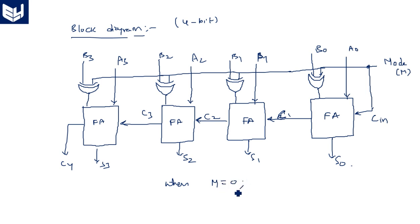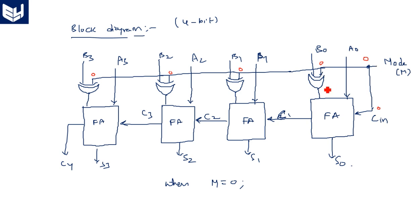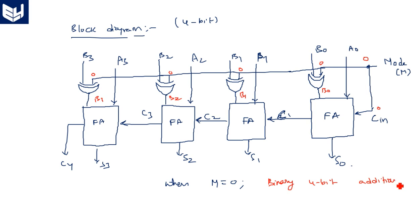When M is equal to 0, the mode signal sends 0 to all XOR gates and also sets Cin to 0. When one input of an XOR gate is 0, the output equals the other input. So the outputs are simply B0, B1, B2, and B3, and carry input is 0. This means the standard binary 4-bit addition operation is performed.